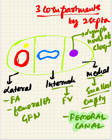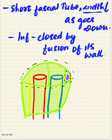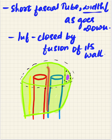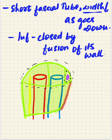The femoral canal is a short fascial tube whose width decreases as it goes downward. It has a uniform width superiorly, but gets closed inferiorly by fusing with its walls.